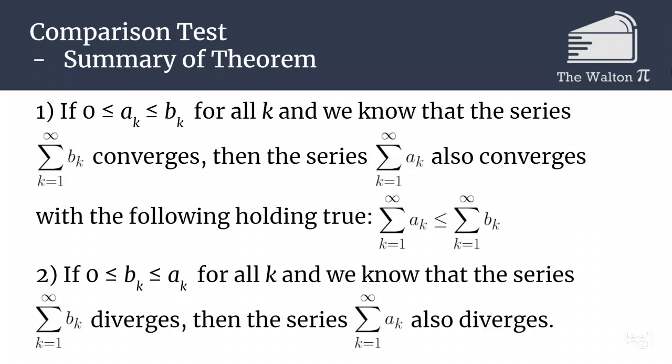Putting both halves on screen at the same time, you can see the two similarities. If we have one series that converges and another series where every term is smaller than or equal to the terms in the convergent series, then that other series will also converge. But if we have a series that diverges and another series where every single term is bigger than the divergent series terms, then that other series will also diverge. Notice: if we have something bigger than a convergent series, the comparison test tells us nothing. Same thing if we have something smaller than a divergent series — the comparison test also tells us nothing. We have to have one of these two situations.